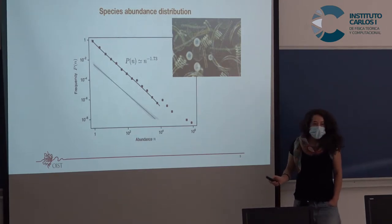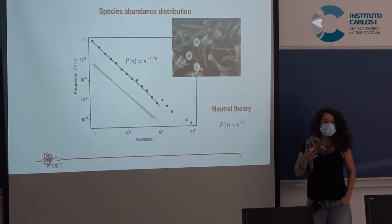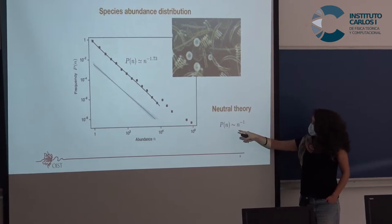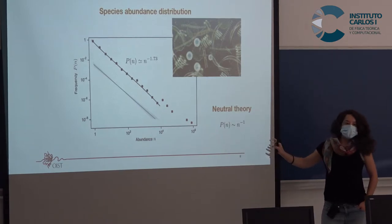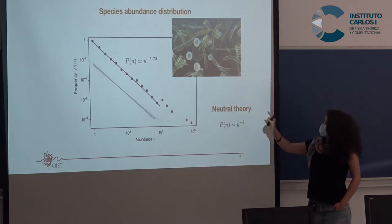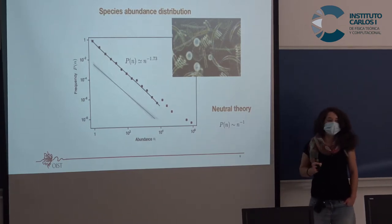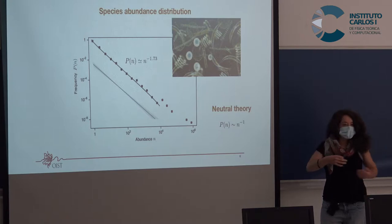Why is an exponent higher than one significant? The simplest theory proposed in ecology to explain ecological communities is neutral theory, which predicts that the distribution decays as a power law with exponent one. Although super simple, it describes many communities. However, it doesn't describe this system, and there is no satisfactory model that explains this. We want to understand why and try to model it.